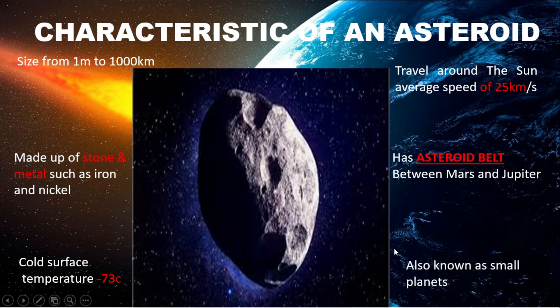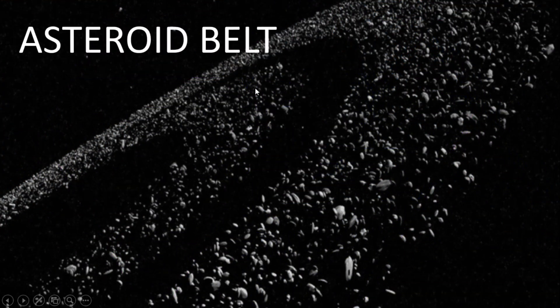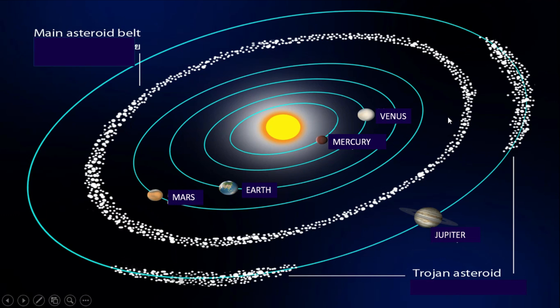which is located between Mars and Jupiter. Lastly, the asteroid is also known as a small planet. This is the asteroid belt that mostly contains rocky and metallic material. You may see in detail the location of the asteroid belt, which is in between Mars and Jupiter.